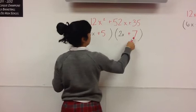Finally, check with the middle term. 5 times 2x plus 6x times 7 equals 52x.